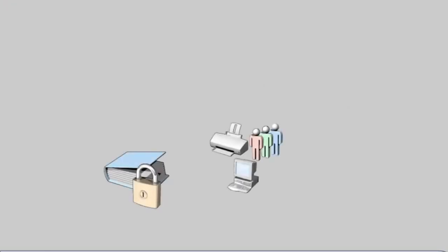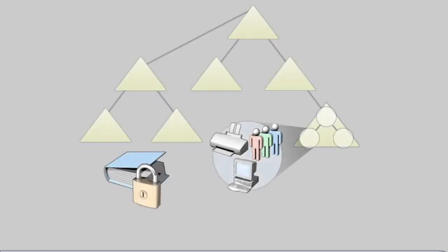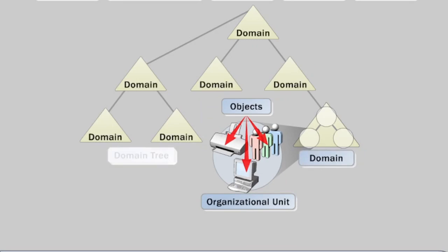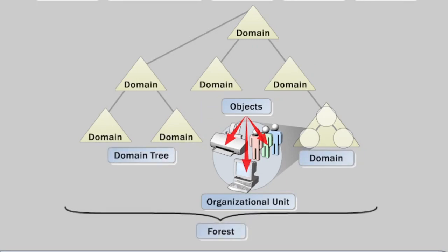Active Directory provides secure storage of information about objects in its hierarchical logical structure. The logical structure consists of objects, organizational units, domains, domain trees, and forests.